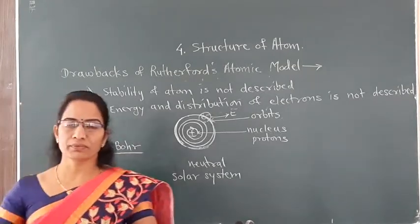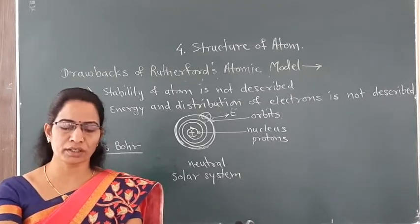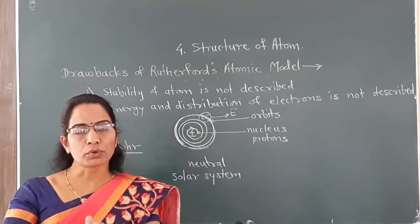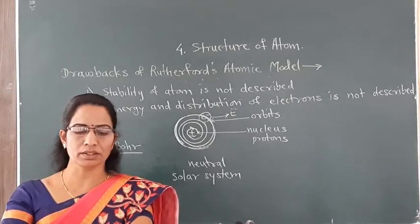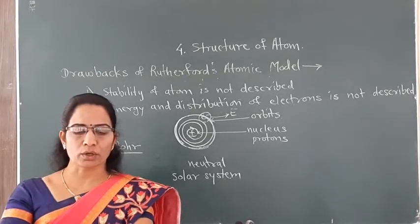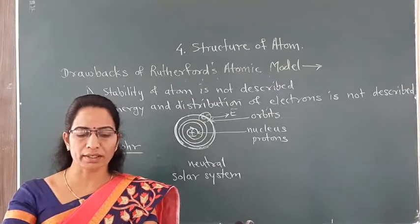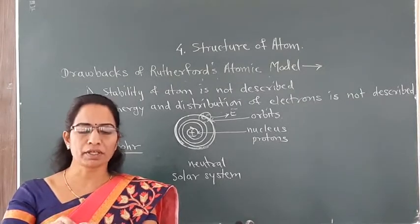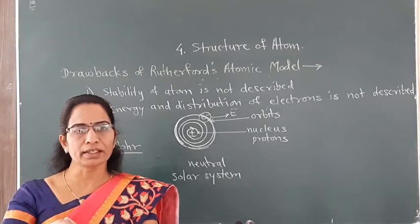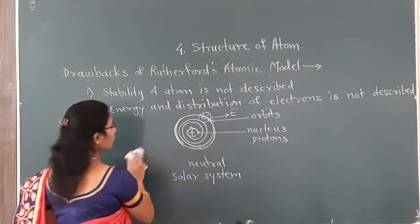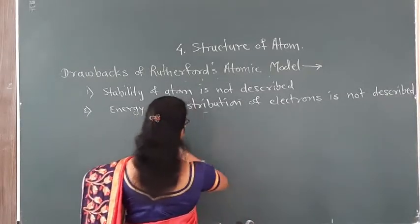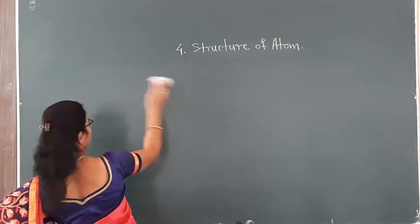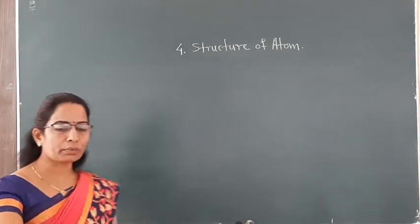Therefore, different scientists made different attempts to explain the accurate structure of the atom. Out of these scientists, Niels Bohr was one. He made a good explanation of the structure of the atom, and nowadays we use Bohr's atomic model to explain atomic structure. Before seeing that model, we will study what led Bohr to develop it — his study of the interactions of radiation with matter.